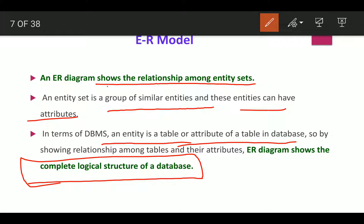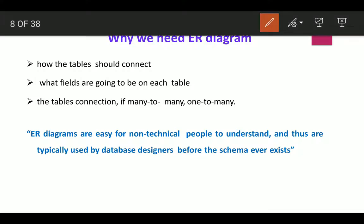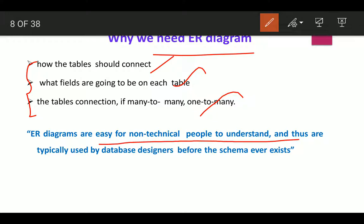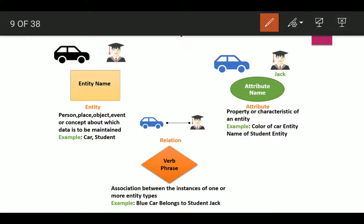By ensuring relationships among tables and their structure, the ER diagram shows the complete logical structure of a database. The three main reasons for using ER diagrams are: first, to show how tables should be connected; second, what fields are going to be on each table; and third, the type of connection — many-to-many, one-to-many, etc. ER diagrams are easy for non-technical people to understand and are used by database designers before the schema ever exists.